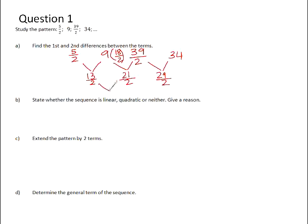If we now found the differences between the first differences, 21 over 2 subtract 13 over 2 is 8 over 2, which simplifies to 4. 29 over 2 subtract 21 over 2 is also 8 over 2, which simplifies to 4.